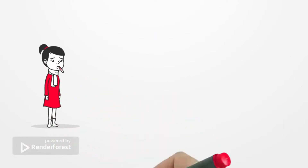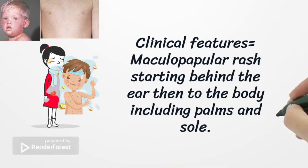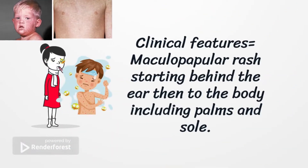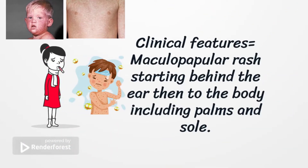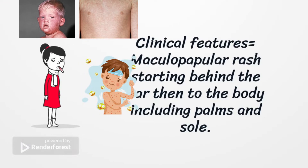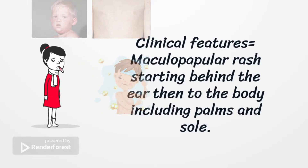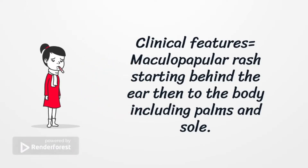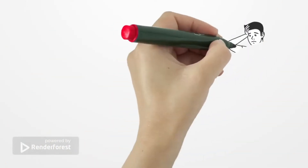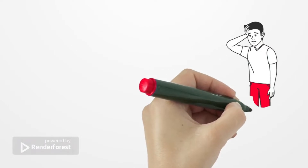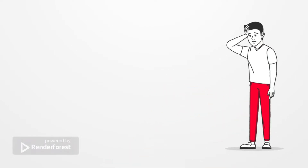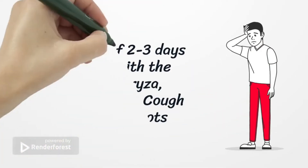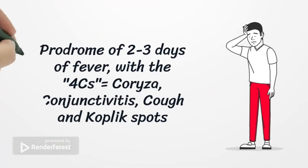Clinical features include a maculopapular rash that spreads from behind the ears to the whole body, including palms and soles of the feet. It also has a prodrome of two to three days of fever and the four C's.